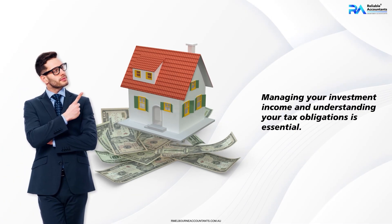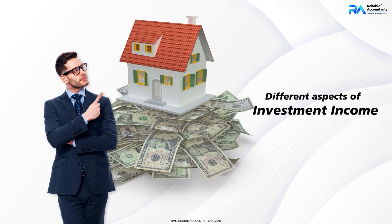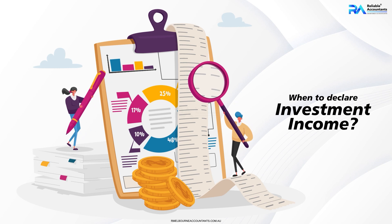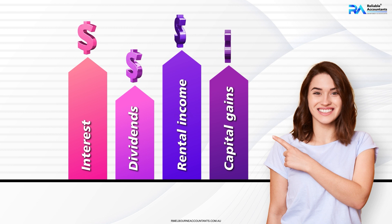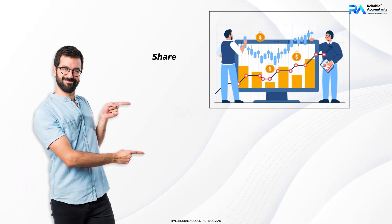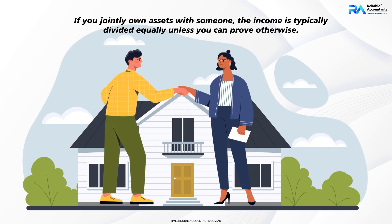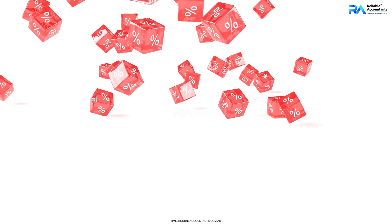Managing your investment income and understanding your tax obligations is essential. It all starts with understanding when to declare investment income — whether it's interest, dividends, rental income, or capital gains, you must declare income earned from your investments. You're responsible for reporting these incomes whether you receive payments directly or through a partnership like a share club or trust. If you jointly own assets with someone, the income is typically divided equally unless you can prove otherwise. Make sure to document your shared ownership accurately.